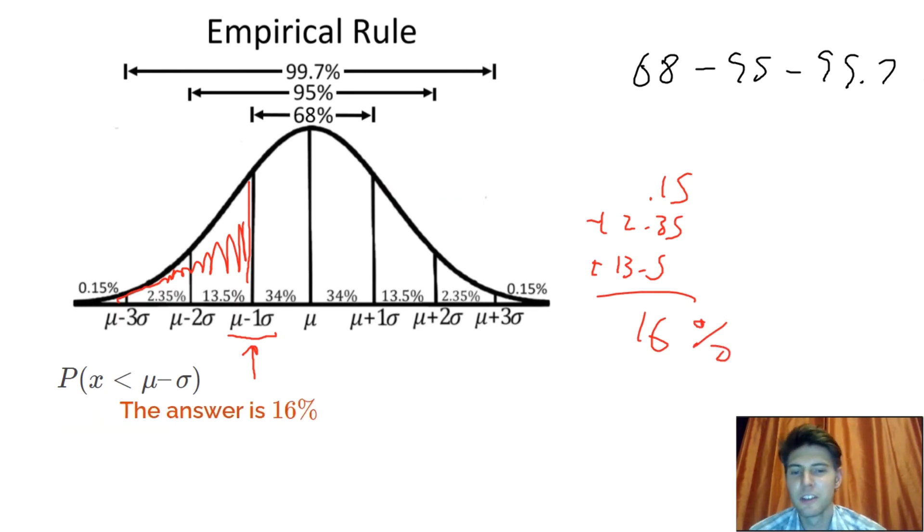And that's it. So the key was this less than right here is what told us to shade less than. And the mu minus sigma told us it was right here.